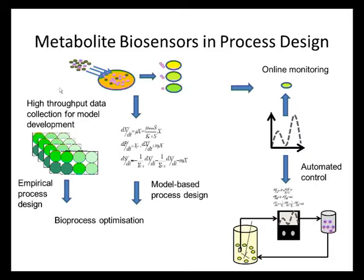Those two things together — the empirical process design and the model-based design — help us to develop an optimization strategy. And finally, once we have the model and we have the biosensors, what we can do is, during production, monitor online the cells and make sure that the metabolite concentrations stay within the ranges they need to be in order to increase our product quality. In doing so, we can hook up an automated control system where a computer monitors the signal and does corrective action if anything falls out of range.